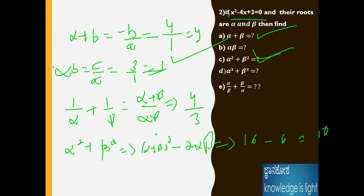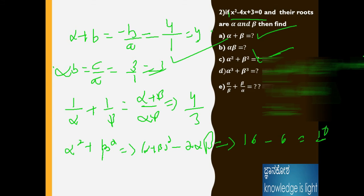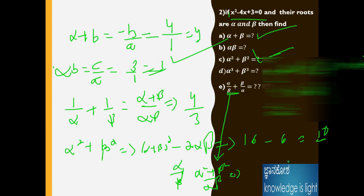Also find (α²+β²)/(αβ). We already calculated α²+β² = 10 and αβ = 3, so the answer is 10/3.